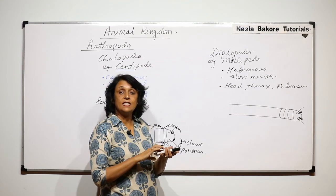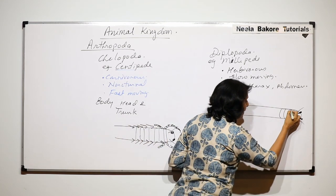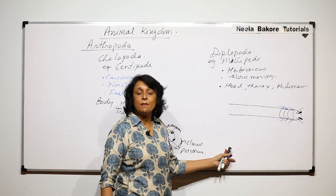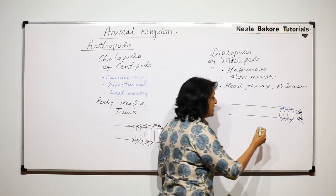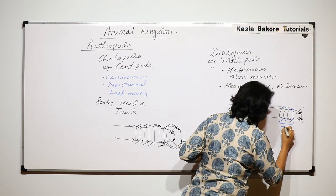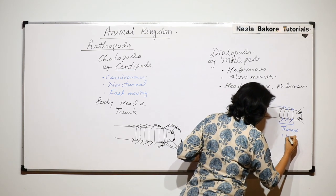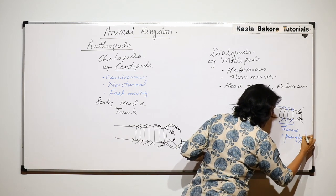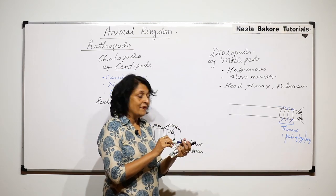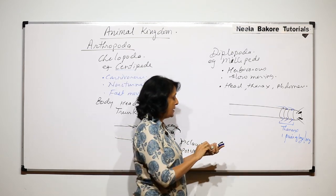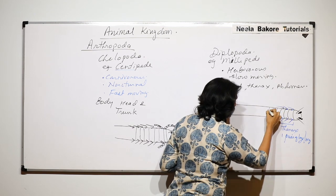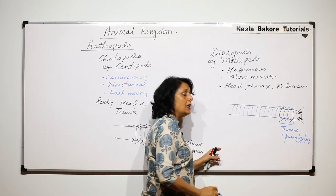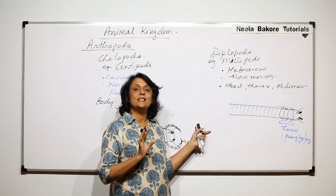The thoracic region has three segments, and from these three thoracic segments arise one pair of walking legs each. So thoracic segments have only one pair of legs per segment. Then there are abdominal segments — these segments are in the abdominal region, normally 40 to 70 segments are there.